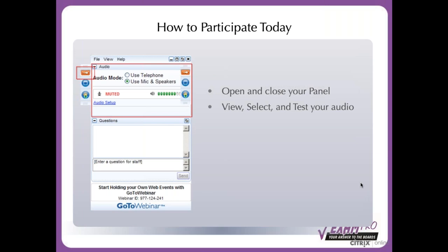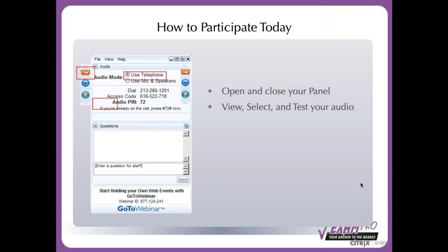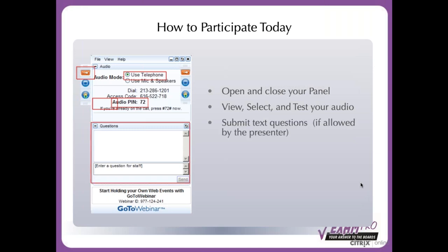When you're opening up the webinar, it will automatically set you to the mics and speakers for audio mode. In this box, you can view, select, and test your audio. If you're concerned about connectivity during the broadcast, you can change it to using your telephone — just dial in, use the access code, and remember to do the audio pin. The only way I can put you on the hot seat is if you've put in that audio pin to access the GoToMeeting audio.